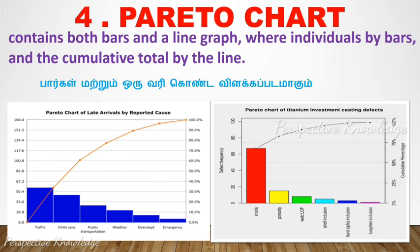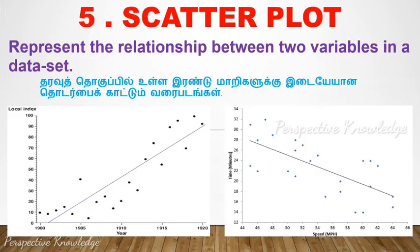The fifth tool is the Scatter Plot. A scatter plot represents the relationship between two variables in a data set. The scatter plot diagram plots two sets of data against each other to identify any relationship.